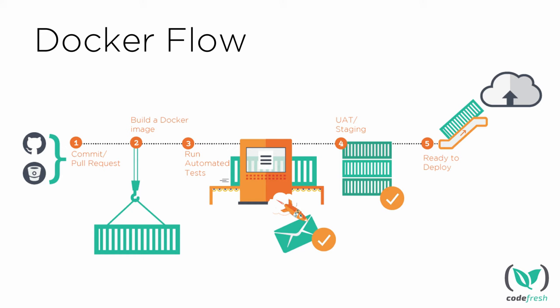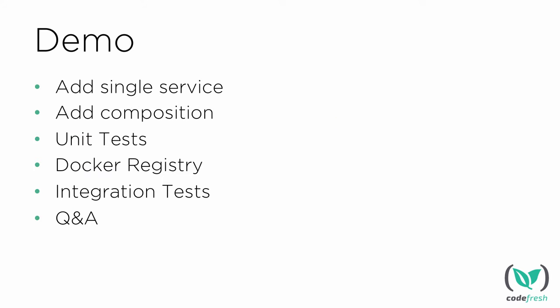Once all tests pass, the Docker image will be marked as ready for deployment and can be promoted to production. Before jumping to the demo, let's take a look at the steps we will be demoing. We'll start by adding a single service to the Codefresh platform. Once we see how it's done, we'll move into adding a composition, since a typical application is composed of multiple services. We'll also see how to add unit tests, configure a Docker registry, add integration tests, and we'll leave some time for Q&A at the end.